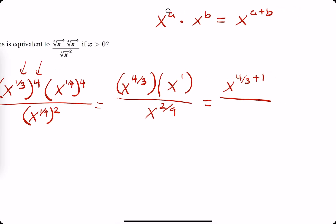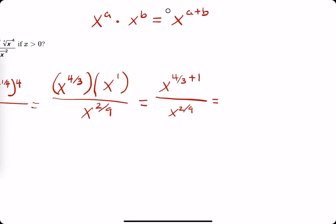We'll work that out in just a sec. We still have x to the two-ninths on the bottom. We have x to the four-thirds plus one, which we can do by adding three over three instead of adding one. Four-thirds plus three-thirds is seven-thirds. And then we still have two-ninths on the bottom.